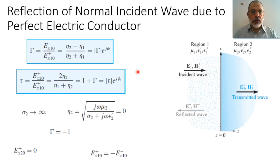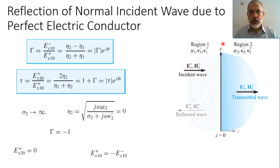Another special case for the reflection of normal incidence is the reflection due to a perfect electric conductor. Assuming that region 1 is a dielectric media and region 2 is a perfect electric conductor, what will be the case for the reflection and transmission coefficients?